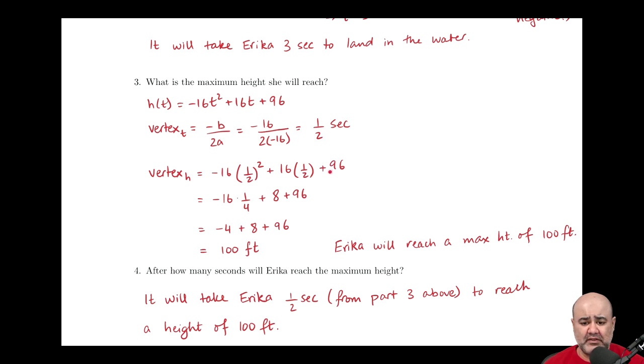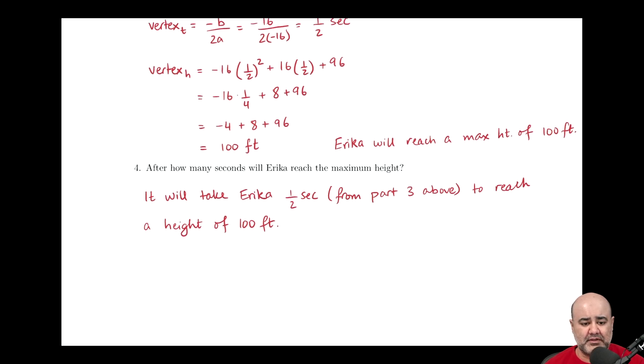Now, this is curious. The cliff was already 96 feet tall. So she's jumping off of 96 feet, and when she jumps, she's not just falling straight into the ocean. She's actually going up in the air. So she goes up to a height of 100 feet, and then sort of turns around and then comes back down to the ocean. So keep this in the back of your mind when we go back to drawing our graph. The last part here is after how many seconds will Erica reach the maximum height. Remember, this was the x-coordinate of the vertex. And we already found this in part 3 above, so all we have to do is just write a sentence referencing that answer. And we can say that it will take Erica one half second, and we can reference that we found it in part 3 above, to reach a height of 100 feet.